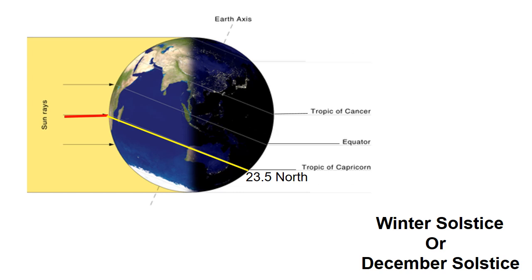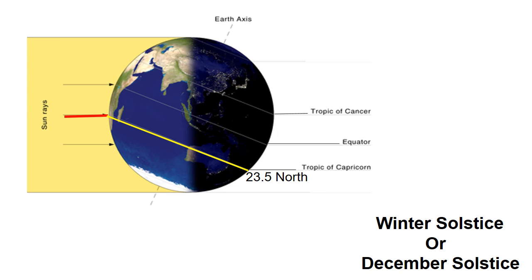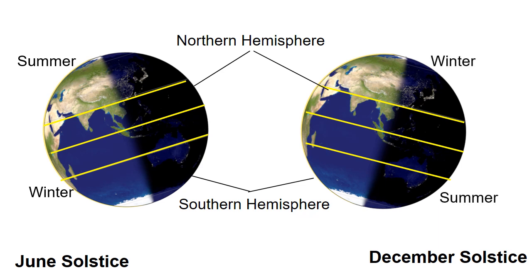Seasons in the southern hemisphere are opposite to those in the northern hemisphere. For example, the June solstice marks the start of summer in the northern hemisphere, but it is the start of winter in the southern hemisphere. And when the December solstice marks the start of winter in the northern hemisphere, it is the start of summer in the southern hemisphere.